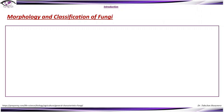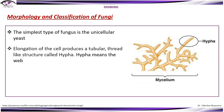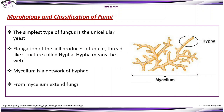Morphology and classification of fungi. The simplest type of fungus is the unicellular yeast. Elongation of the cell produces a tubular thread-like structure called hypha — hypha means 'the web.' Mycelium is a network of hypha, from which fungi extend.